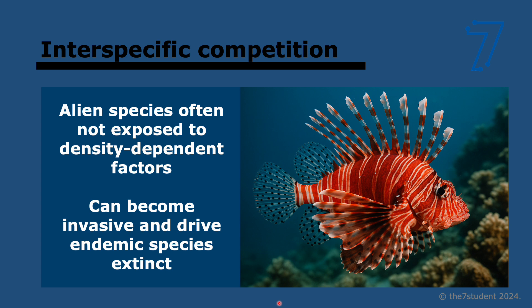Another interspecific relationship is competition, specifically looking at endemic versus invasive species. Endemic species occur naturally in an area; invasive species are introduced by humans and spread rapidly. This normally happens because the invasive species is not limited by density-dependent factors — its natural predators or pests are absent — whereas those for the endemic species are present. For example, red lionfish are endemic to the Indo-Pacific, but after escaping from aquariums in Florida they multiplied in Florida and the Caribbean, aggressively excluding other fish, making them an invasive species there.